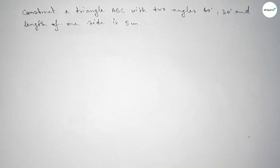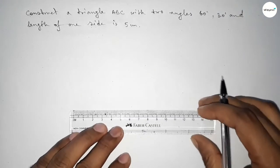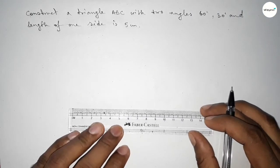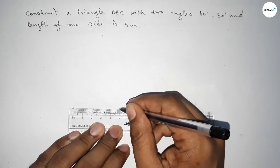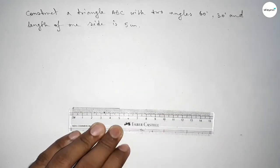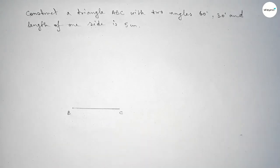Let's start the video. First of all, we have to draw here a line of length 5 centimeters. So this is a 5 centimeter line, taking here point B and here C. Now first we have to draw a 60 degree angle on the point B.